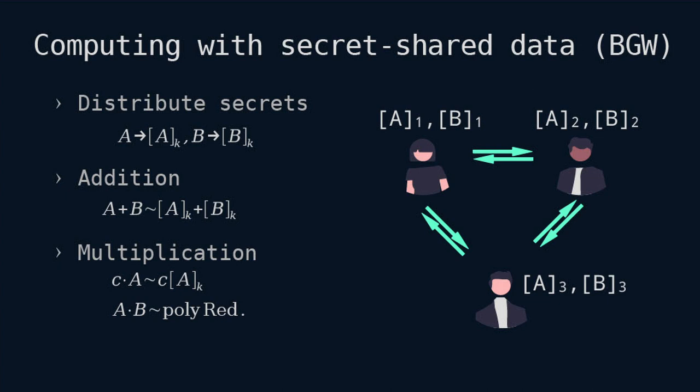Now we have several secrets — in fact, two here. Let's say we have three players who each have a share of these two secrets. What gets really interesting is when you want to compute with them. Think of it as points on the polynomial. If you consider addition, you can just add these points on the polynomial, which basically adds the polynomials together — which is basically adding the secrets together. So addition is pretty simple because it doesn't require any form of interaction.